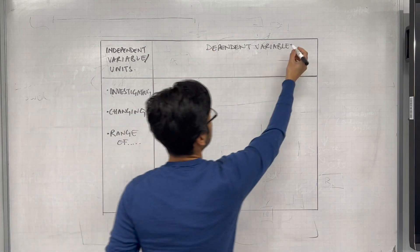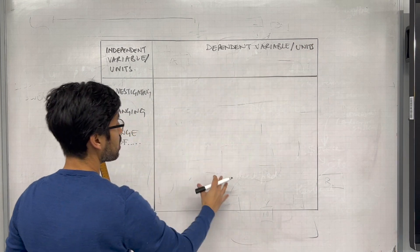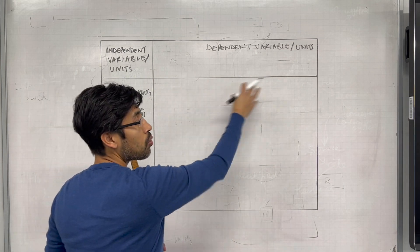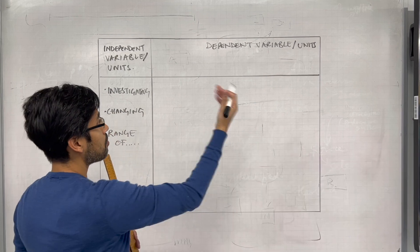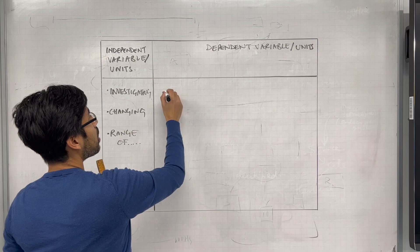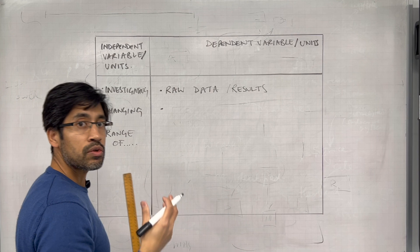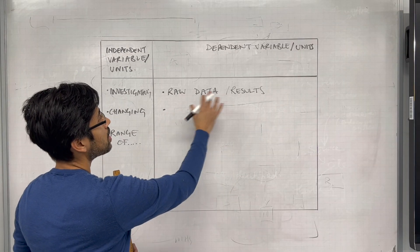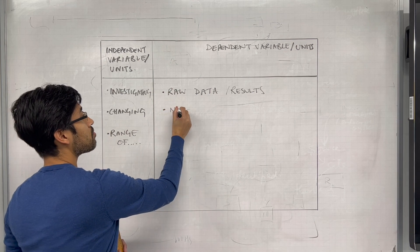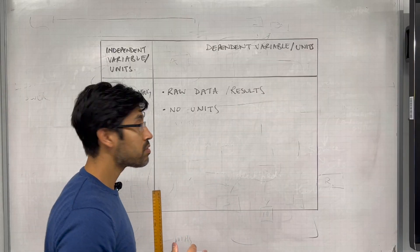We've got our dependent variable, again with the unit up top. And then you're going to have your dependent variable here. Sometimes you might have a number of repeat measurements, and they'll go across like so. This is where we record our raw data — our results. Now, there are a few important things here: the numbers have to be recorded here and we must have no units. Very important — no units in the main body of the table.